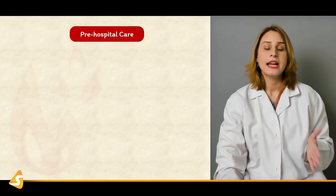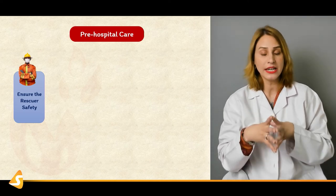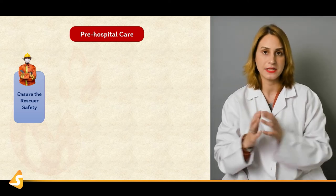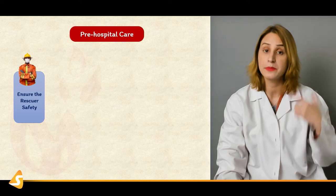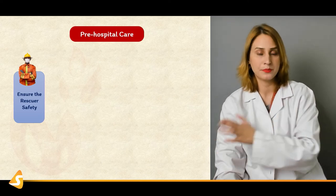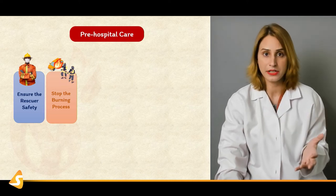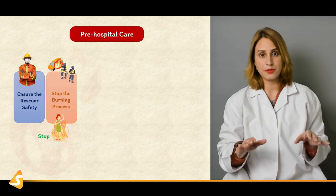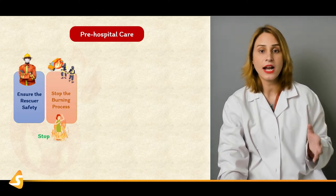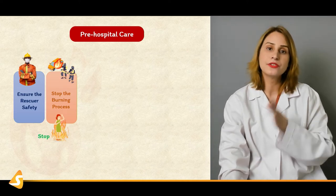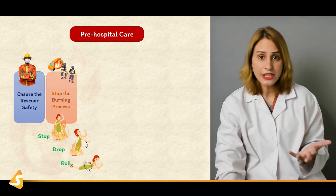In the pre-hospital care, first of all you have to ensure the safety of the patient — the rescuer safety and the patient safety. It starts from evacuating the patient from the burn scene. The victim is moved from the premises. Then you also have to stop, drop, and roll — that's actually stopping the burning process. What happens is in stopping the burning process, you have to limit the damage. Whatever damage is already done you have to treat, but still you have to stop the ongoing damage, following the rule: stop, drop, and roll. That's how you should be evacuating the patient from the burn scene.